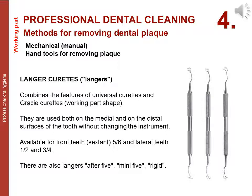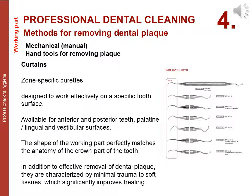Langer curets combine the features of universal and Gracey curets; they are used on both the medial and distal surfaces without changing the instrument, available for front and lateral teeth, also in after-5, mini-5, and rigid versions. Zone-specific curets are designed for effective work on a specific tooth surface — available for anterior and posterior teeth, palatine, lingual, and vestibular surfaces. The shape of the working part perfectly matches the anatomy of the crown, and they are characterized by minimal trauma to soft tissue.